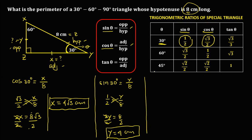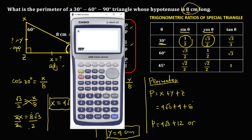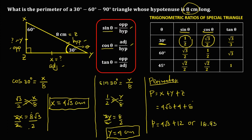To solve for the perimeter: since the perimeter of a triangle is the sum of the three sides, that's side X plus side Y plus side Z. Side X is 4 square root of 3, plus side Y is 4, plus side Z is 8. So the perimeter equals 4 square root of 3 plus 12. Converting to decimal, 4 square root of 3 plus 12 equals approximately 18.93 centimeters. So this is the perimeter of the triangle.